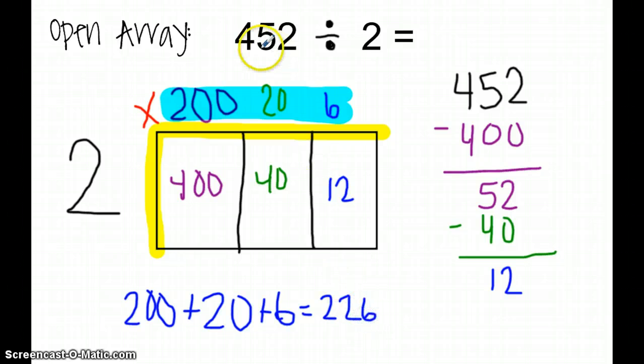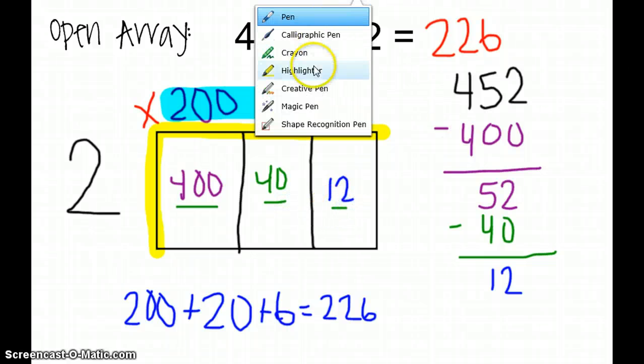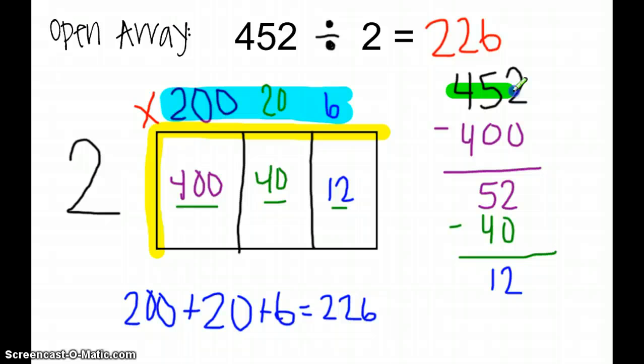The answer to 452 divided by 2 is 226. If you notice, if you add 400 plus 40 plus 12, that will give you 452. So my 452 is still on the inside. It's just broken up by place.